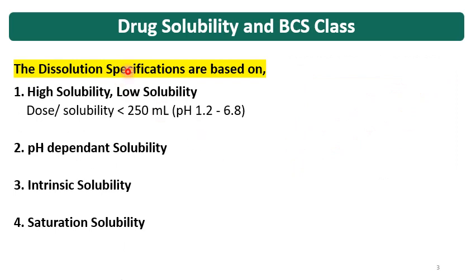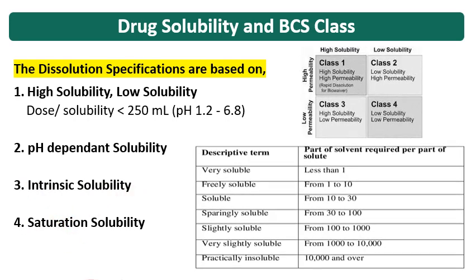Another point which affects dissolution and on which dissolution specifications are based is solubility. The drug product may have low solubility or high solubility. The drug dose versus solubility of the drug in 250 ml over the pH range of 1.2 to 6.8 is considered when selecting the dissolution specification. Then whether the drug has pH dependent solubility, what is the intrinsic solubility, and saturation solubility. The BCS class is also considered — class 1 and class 3 are highly soluble, while class 2 and 4 are low solubility molecules.